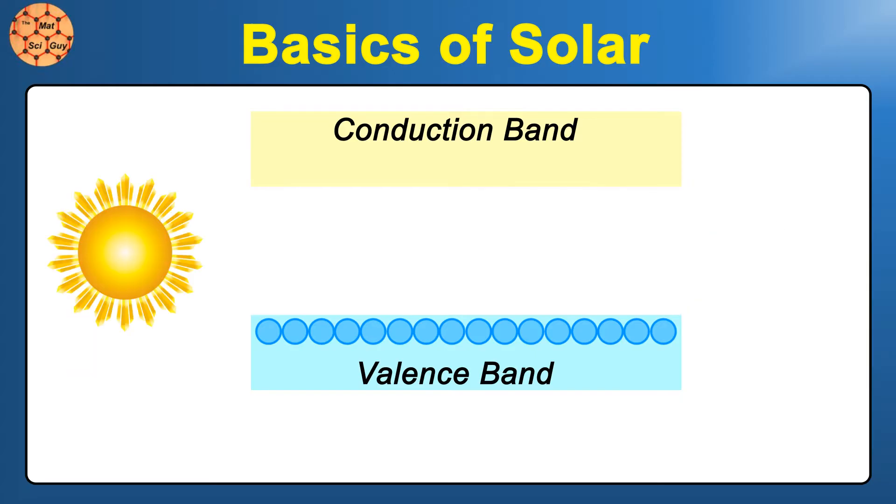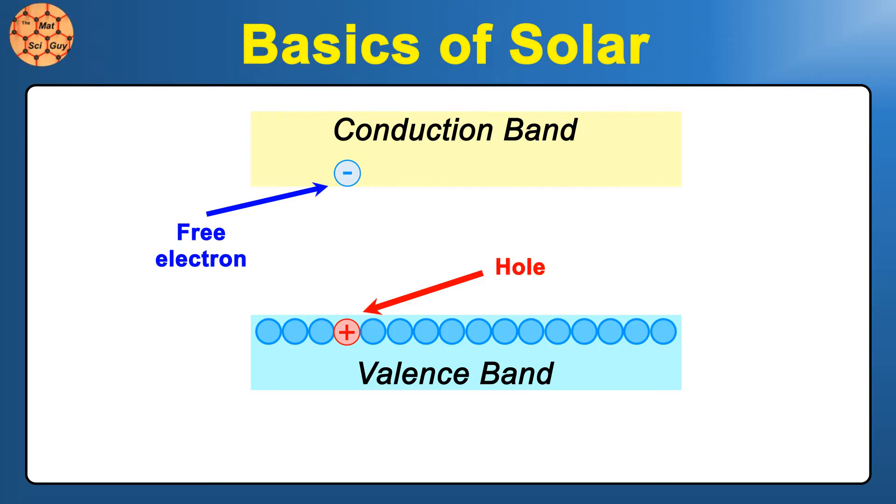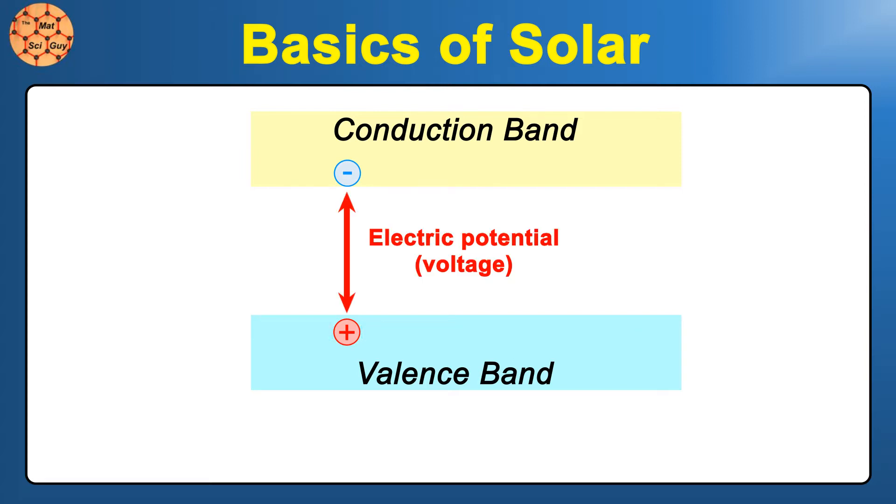When light with sufficient energy hits the material, an electron can get promoted from the valence to the conduction band. We're now left with an electron that is free to move around in the conduction band, and a positively charged space in the valence band where an electron is missing, called a hole. From here, the principle behind photovoltaic solar is actually quite simple.